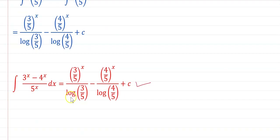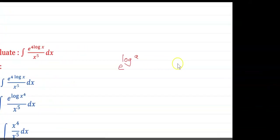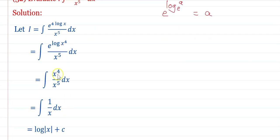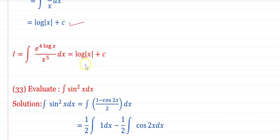Evaluate ∫e^(4 log x) / x⁵ dx. Since e^(4 log x) = x⁴, this becomes ∫x⁴/x⁵ dx = ∫(1/x)dx = log|x| + C.